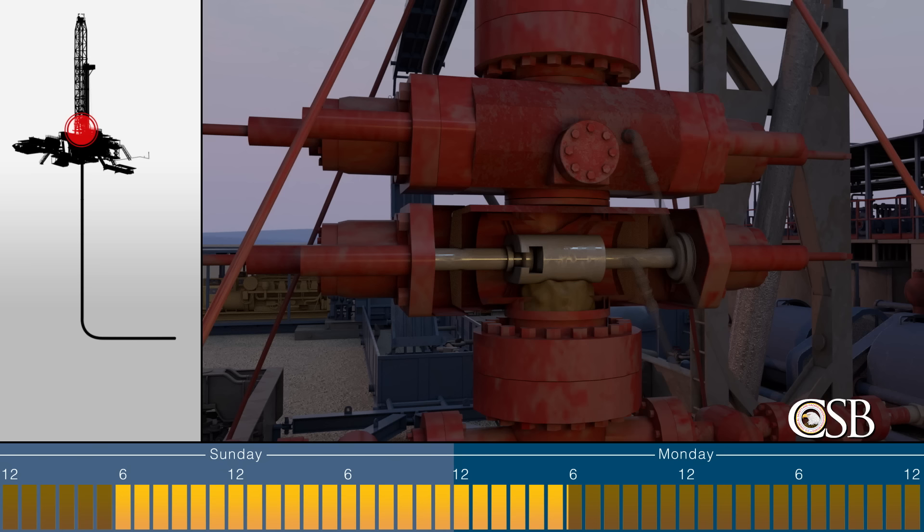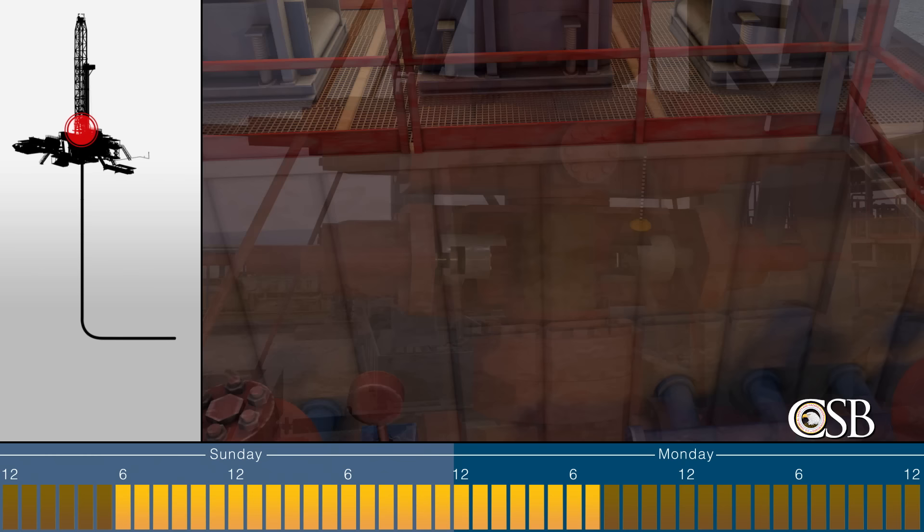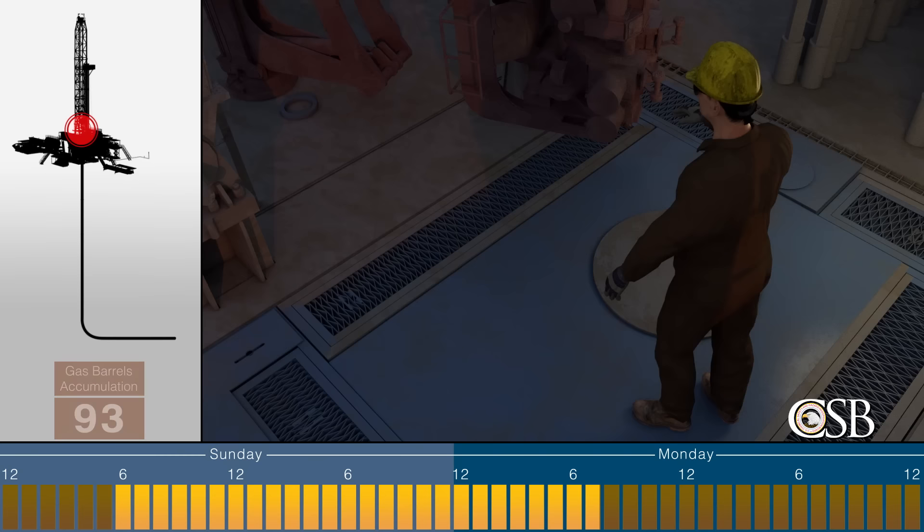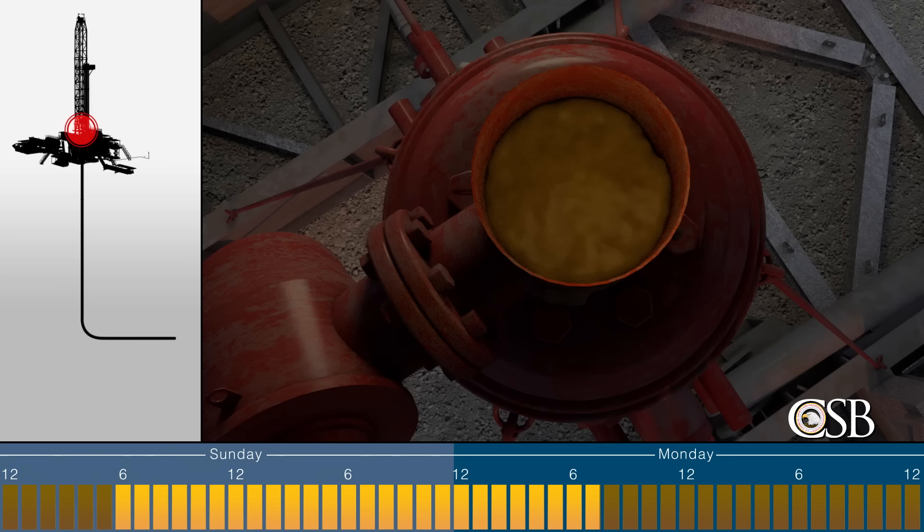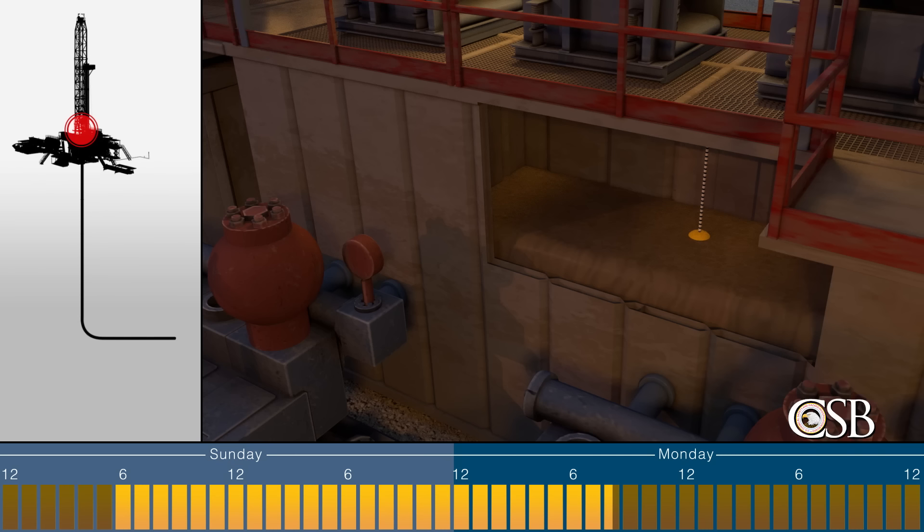But at 7:57 a.m., when the blind rams were reopened so the new bottom hole assembly could be lowered into the well, five barrels of mud surged to the mud pits. At that time, a crew member pulled away the steel plate that had been covering the hole in the rig floor over the well. He waved over another worker who saw mud bubbling in the well, a sign that there was a significant amount of gas in the mud. That worker later told the CSB that he does not know if the mud bubbling was communicated to the driller.